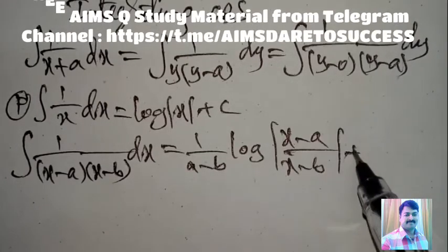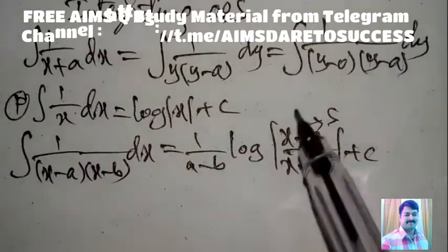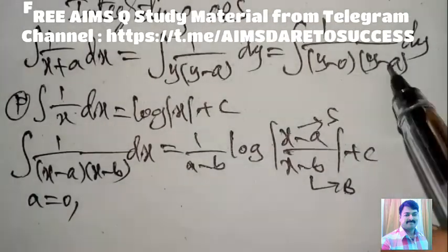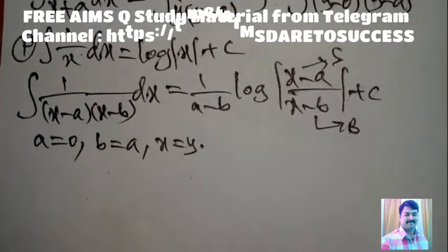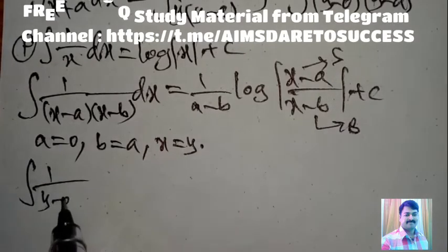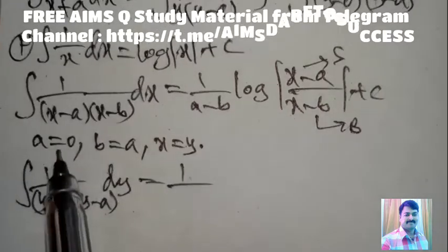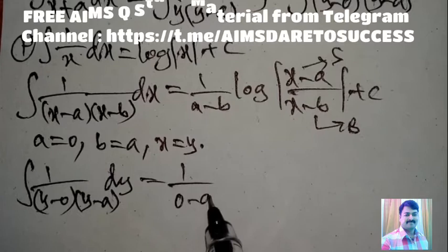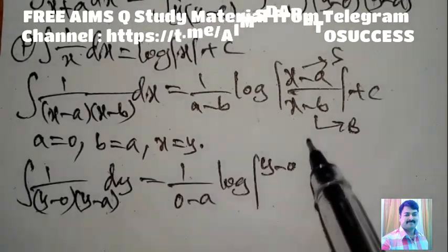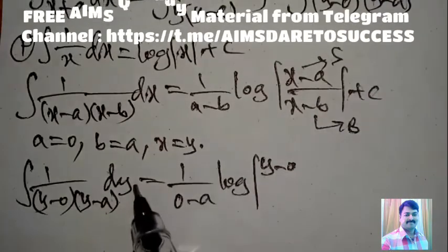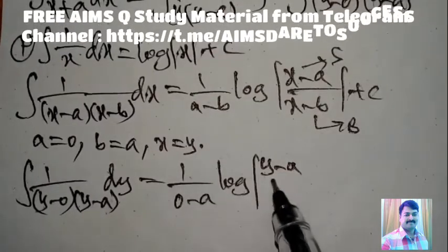Here a = 0 and b = a (the constant), x replaced by y. Substituting: 1/(a − b) = 1/(0 − a) = −1/a. The smaller value is y − a and the larger is y − 0 = y. So we get −(1/a) × log|(y − a)/y|.